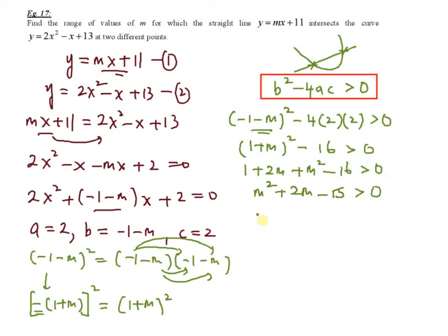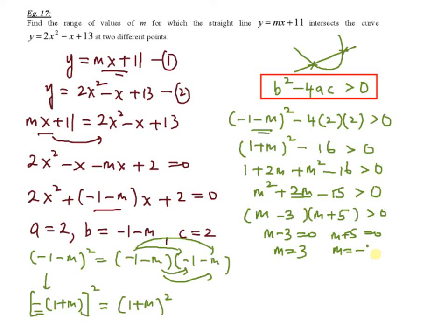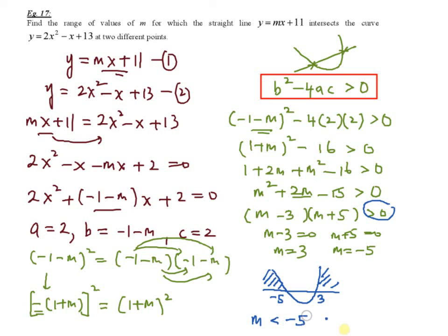This is a quadratic inequality, so factorize first. m squared plus 2m minus 15 factors as m minus 3 times m plus 5. Setting each factor to zero gives m equals 3 and m equals negative 5. Sketch the parabola: the intersection points are negative 5 and 3. Since we need the expression greater than 0, we shade the upper region. The final answer is m less than negative 5 or m more than 3, which is the range of values of m.